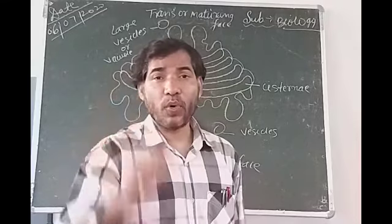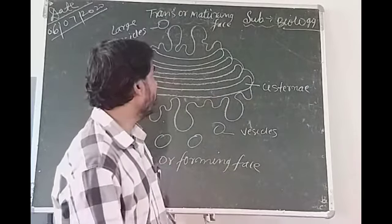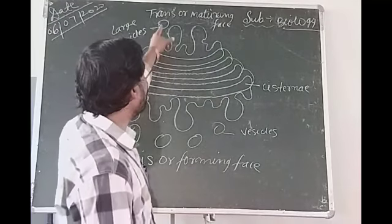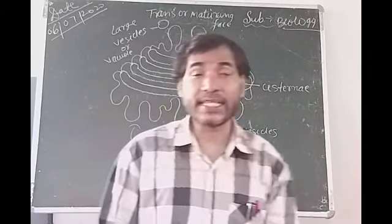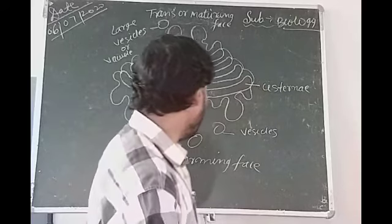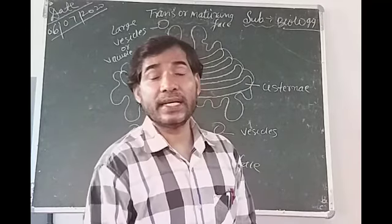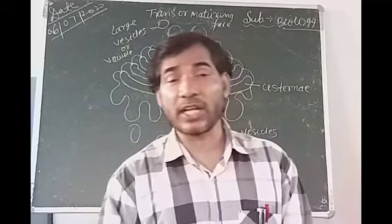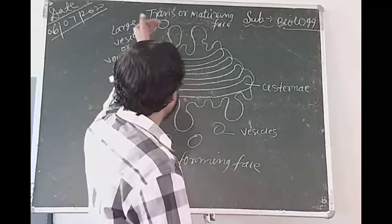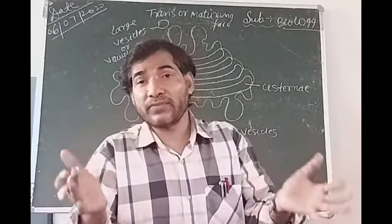Golgi apparatus has two faces, in which one is called cis or forming face, whereas the other is called trans or maturing face. The cis face receives the secretory material from the smooth endoplasmic reticulum through transporting vesicles. These secretory materials are processed in the Golgi apparatus, and from the trans or maturing face, secretory vesicles are budded off in the form of large vesicles or vacuoles.